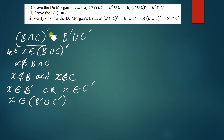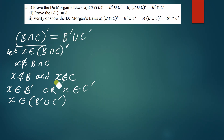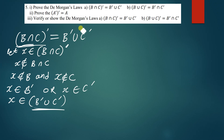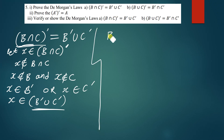Therefore the left hand side is equal to the right hand side. The left hand side is a proper subset of the right hand side because we have proved that the left hand side equals the right hand side. Let's quickly move on to the other law.